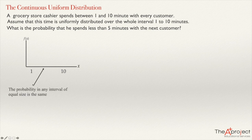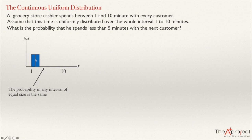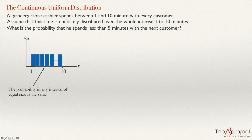What does it mean that it's uniformly distributed? It means that the probability in any interval of equal size will be the same. For example, the probability that the time is between one and two minutes will be the same as between two and three minutes. So these two rectangles will be of equal height, and the histogram will be made by rectangles of equal height.